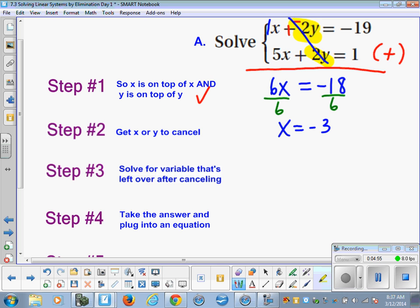Okay, so we're going to write our answer as an ordered pair. So we're going to wait for that other thing, the other coordinate. So we got x or y to cancel and we solved for the variable that was left over. Now we're going to take our answer and plug it into an equation. It doesn't matter which one. Okay, but I'm going to go back to the original equations before I wrote all over them. And we're going to plug it into there. So I'm just going to pick the first equation.